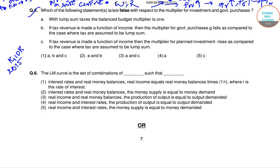The question asks which of the following statements are false with respect to the multiplier of investment and government purchase. With lump sum taxes the balanced budget multiplier is one. If the tax revenue is made a function of income then the multiplier of the government purchase is falls as compared to the case where the tax rate were assumed to be lump sum. And the third one is if tax revenue is made a function of income, then the multiplier of planned investment rises as compared to the case where tax are assumed to be lump sum.